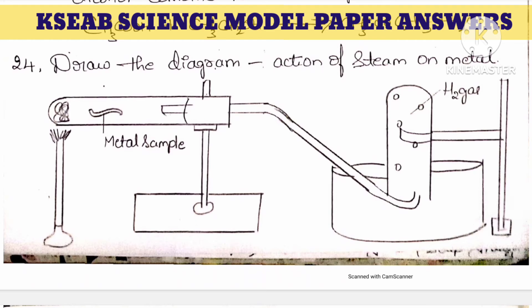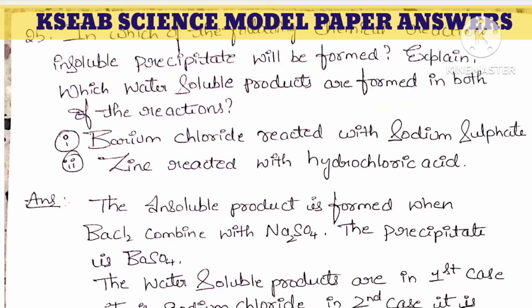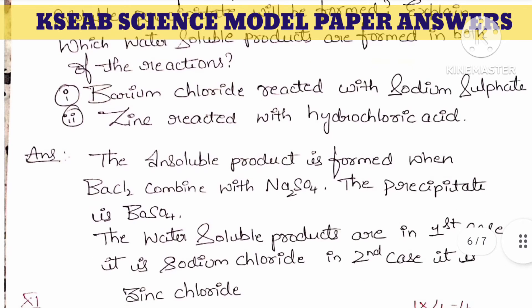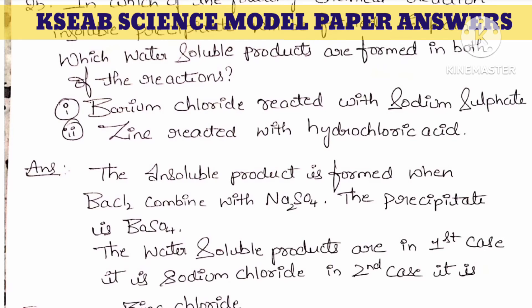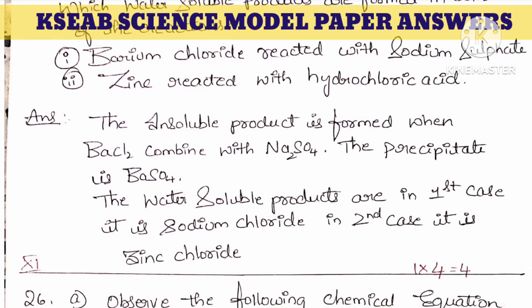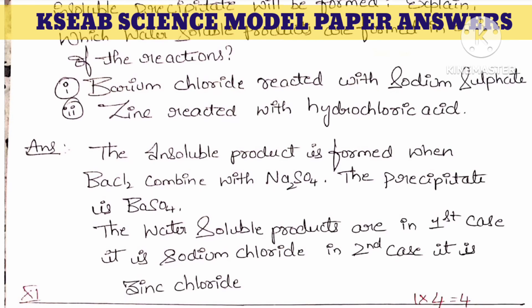Next question: in which of the following chemical reactions will an insoluble precipitate be formed? Barium chloride reacts with sodium sulfate; zinc reacts with hydrochloric acid. The insoluble precipitate is barium sulfate, formed when barium chloride combines with sodium sulfate. The water-soluble products are: sodium chloride in the first case, and zinc chloride when zinc reacts with hydrochloric acid.